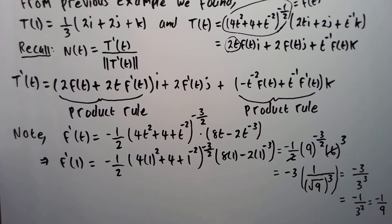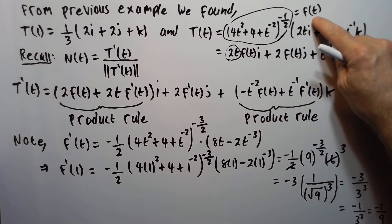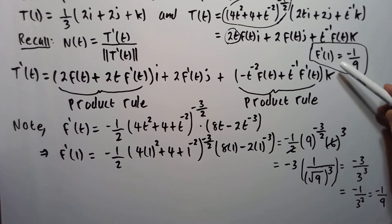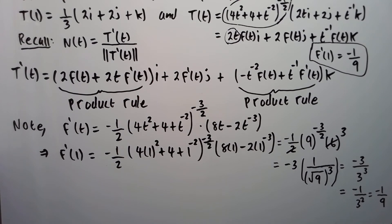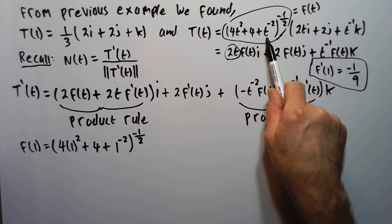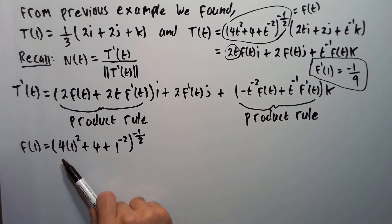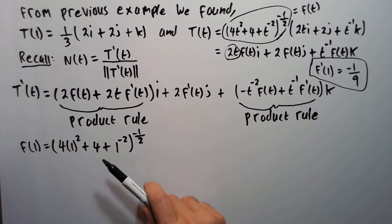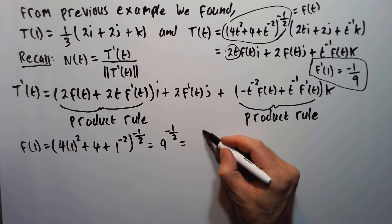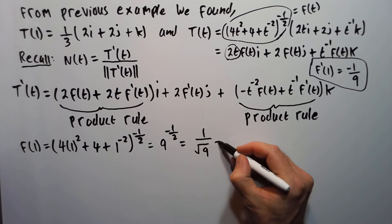Now let's find f of 1. My f of T is 4T squared plus 4 plus T to the minus 2 raised to the minus one half. Putting 1 in place of T, we get 4 plus 4 plus 1, which is 9, so it's 9 to the minus one half, which means 1 over square root of 9, which equals one third. So f of 1 equals one third.